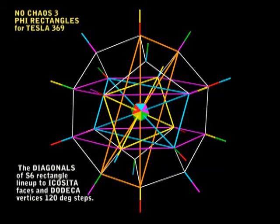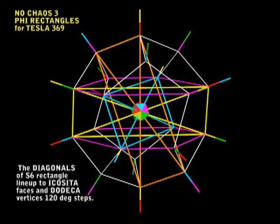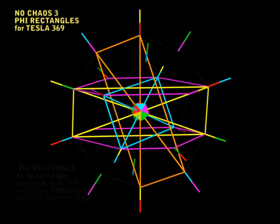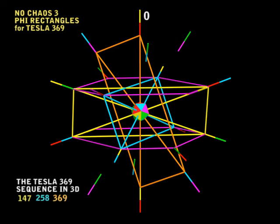Now I'm going to show you the same animation, but I'm going to hide the dodeca and show you some numbers. We'll start with the red and yellow vector, which is our rotational axis, and this will be our zero. And our next position will be the cyan and purple vector, which will be number three.